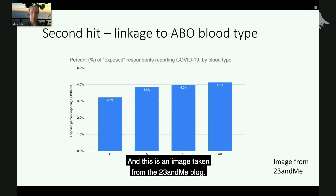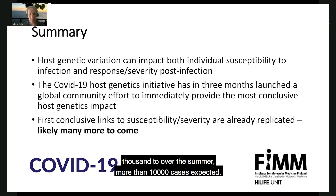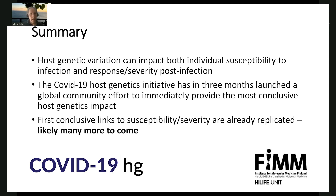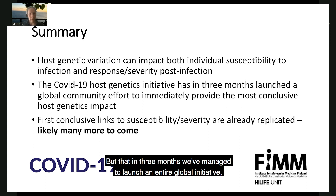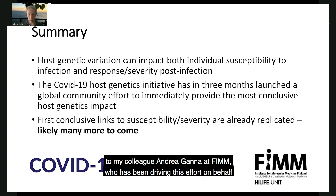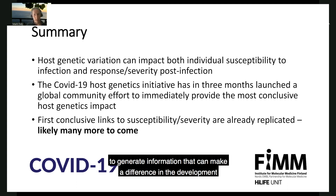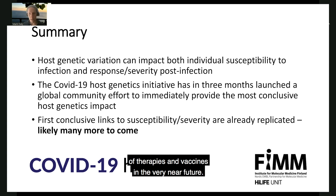This is an image taken from the 23andMe blog. I want to leave you with the idea that this is really the first beginnings of discovery, and that there is much, much more to come as the activity grows from a few hundred to a few thousand to, over the summer, more than 10,000 cases expected. In three months, we've managed to launch an entire global initiative, get more than 1,000 scientists to sign on to it, and have already made the first conclusive links to genetic susceptibility and severity. Thanks especially to my colleague Andrea Gamma at FIM, who has been driving this effort on behalf of the entire world to try to generate information that can make a difference in the development of therapies and vaccines in the very near future.